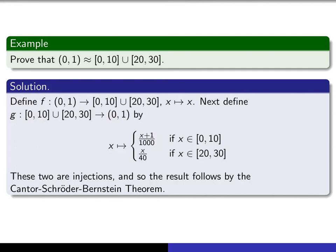So it's easy to check that this piece maps to the interval from 1/1000 to 10/1000. So that's sort of a small piece on the left side of this. And then I map this piece to x over 40. So that's going to map to 20/40, which is 1/2 to 3/4. And so it's easy to check that those are both injections. And that completes the proof.